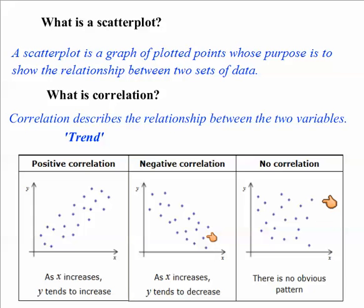And then sometimes we might graph some data and the points are just random. They're all over the place. There's no obvious pattern. And that means that those two pieces of data are not trending together. There isn't a relationship there and we call that no correlation.